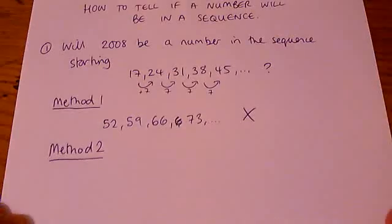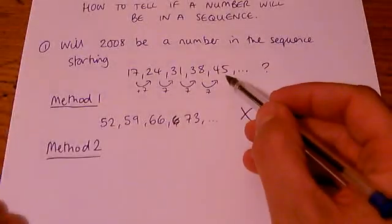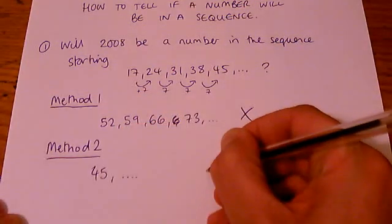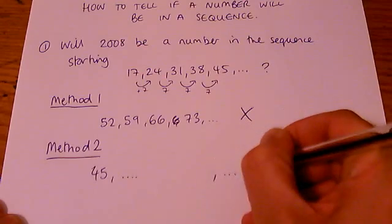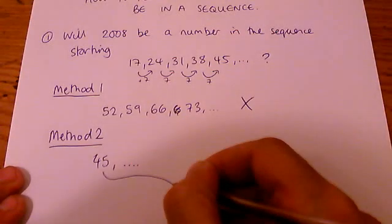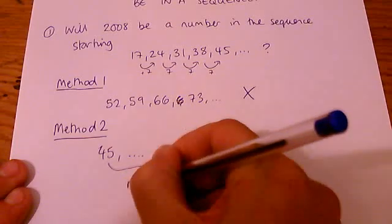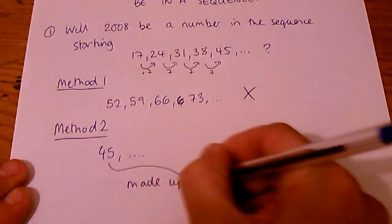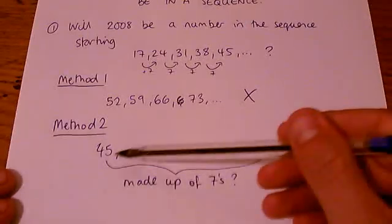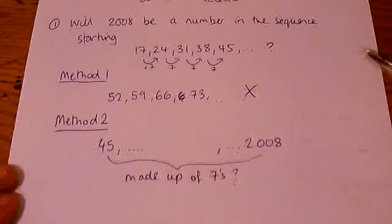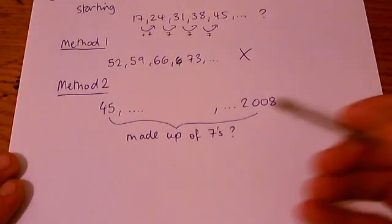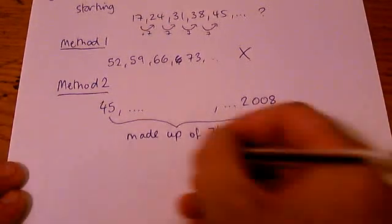Method two is a little bit more analytical. If you look at this 45 here, I'm going to keep adding sevens. And are we going to get to 2008? Well, if we are, that gap has got to be made up of sevens. If that gap was made up of sevens, if that was lots and lots of sevens all added on, then we would reach 2008. So let's just check. Let's see if that gap between 45 and 2008 is made up of sevens.